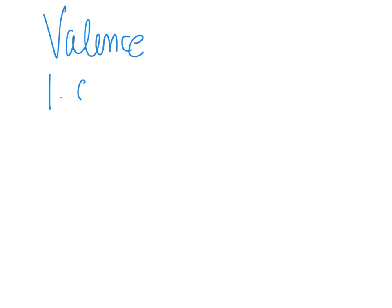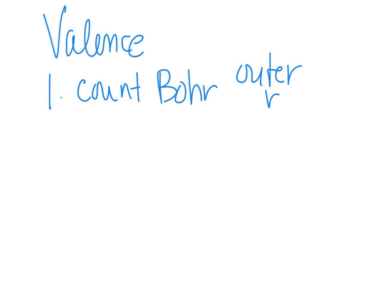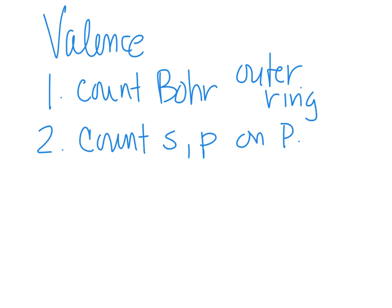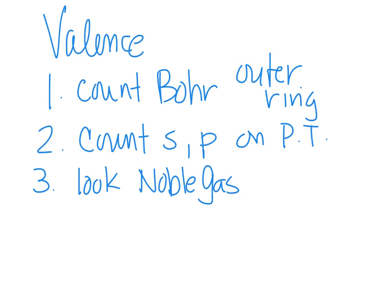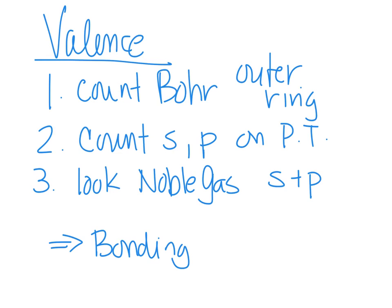Recapping valence electrons: we have three methods. One, you can count from the Bohr model's outer ring. Two, you can count S's and P's on the periodic table. Three, you can look at the noble gas configuration and add the S's and the P's. Remember, valence electrons are what you use for bonding, and they are also part of why chemicals or elements react the way they do.